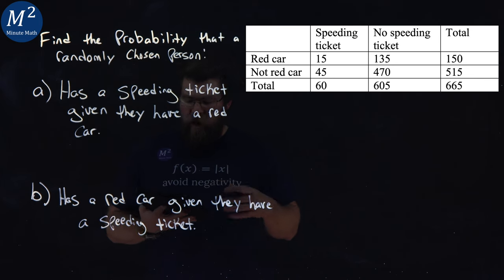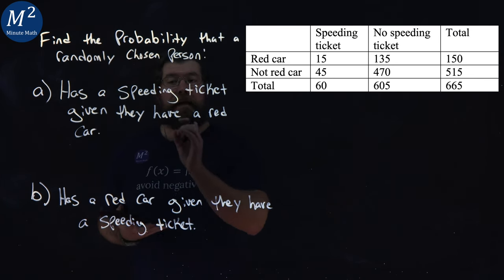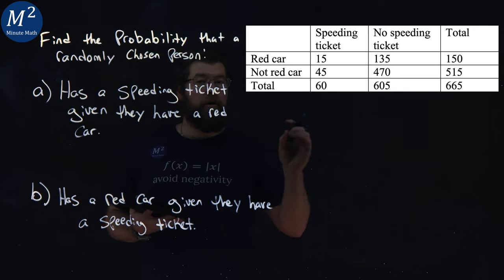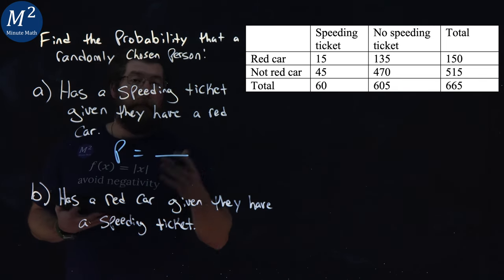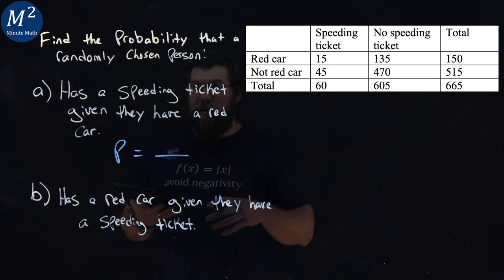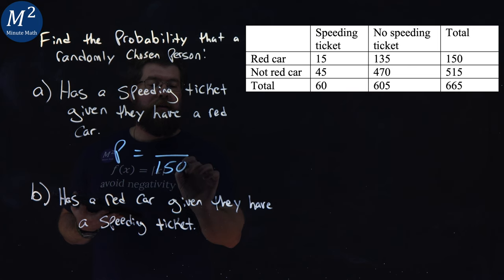Let's learn. For our first one here, A has a speeding ticket given they have a red car. Our total here on the bottom is a total number of red cars, which is 150.